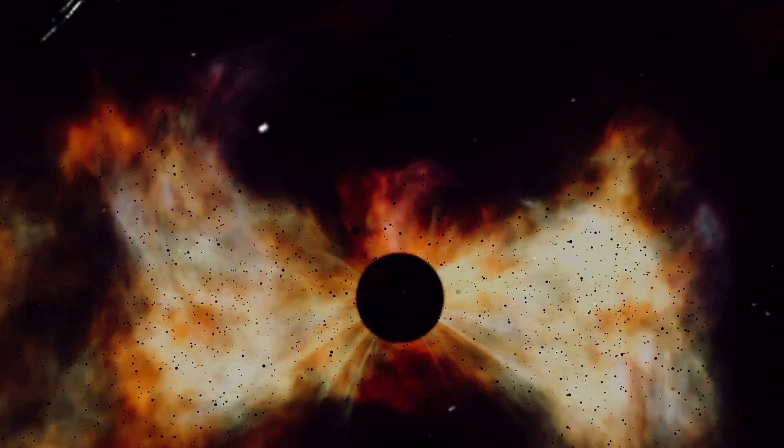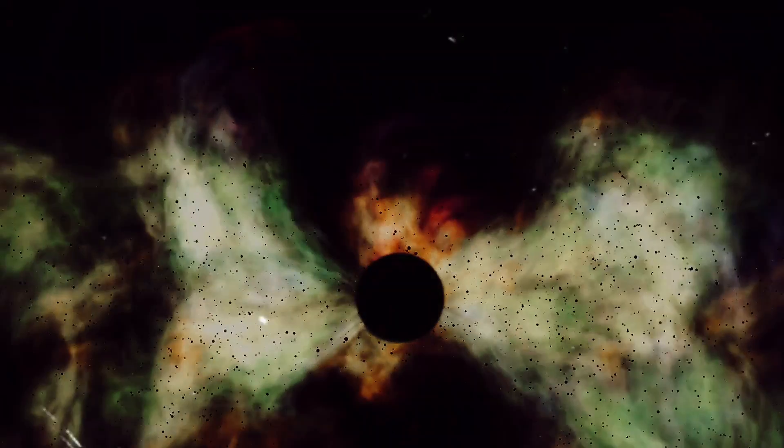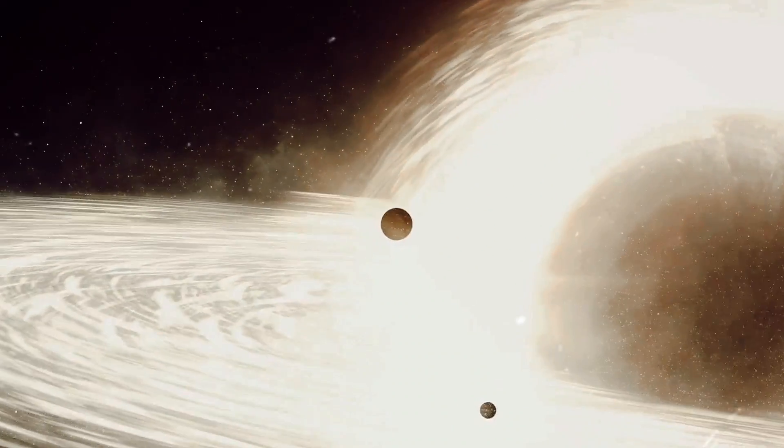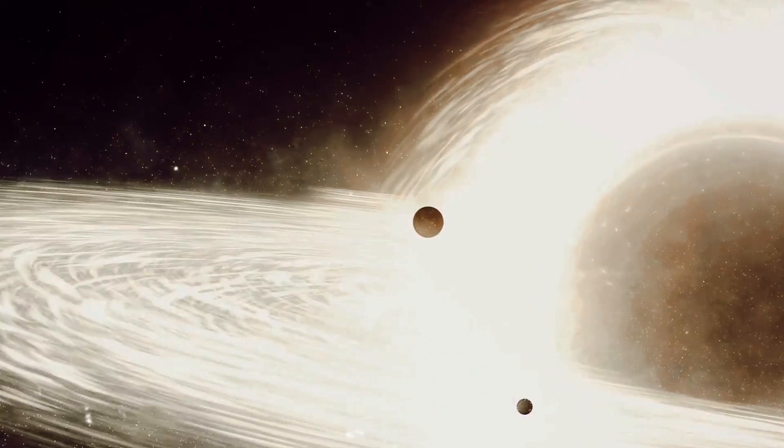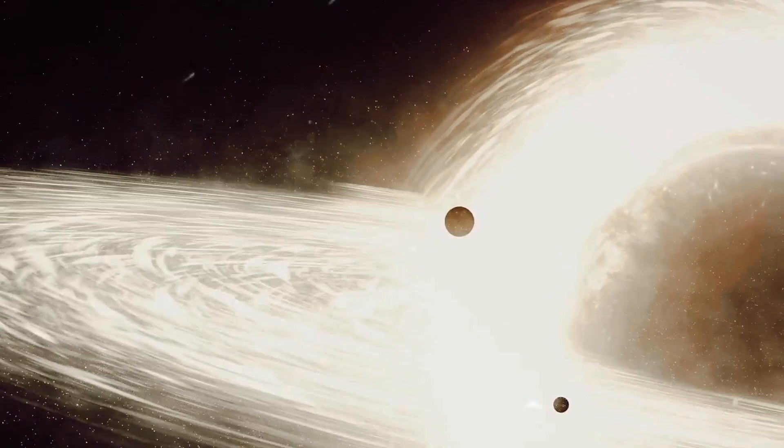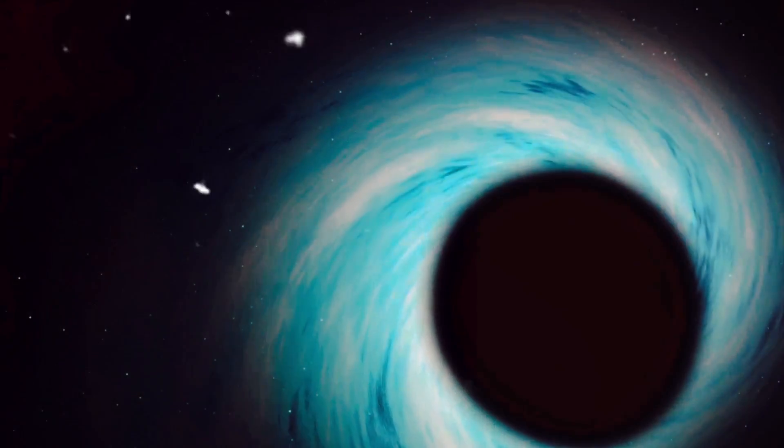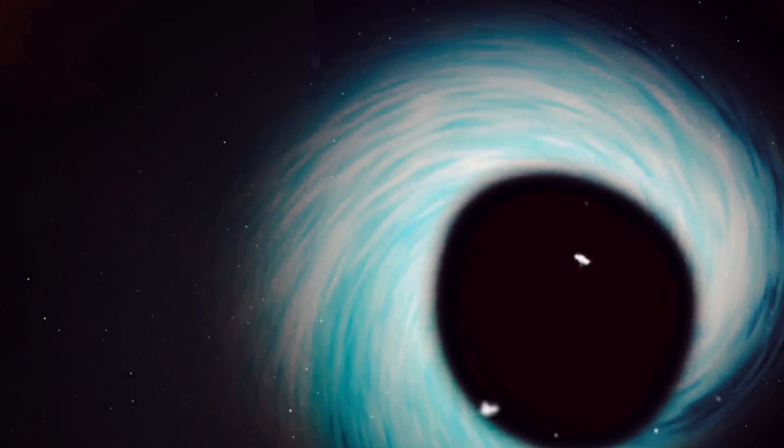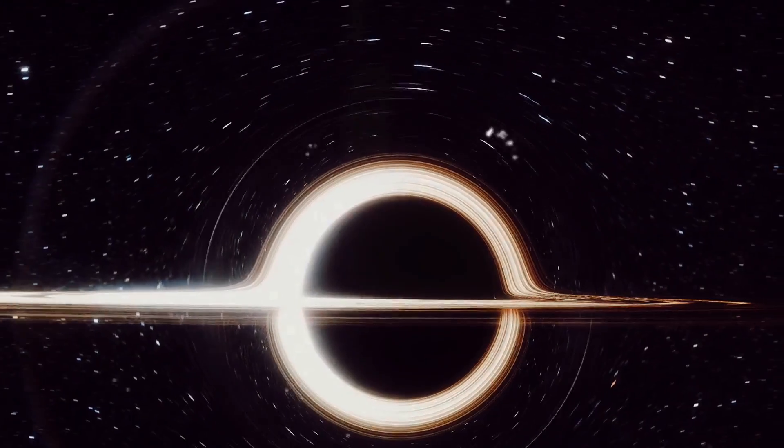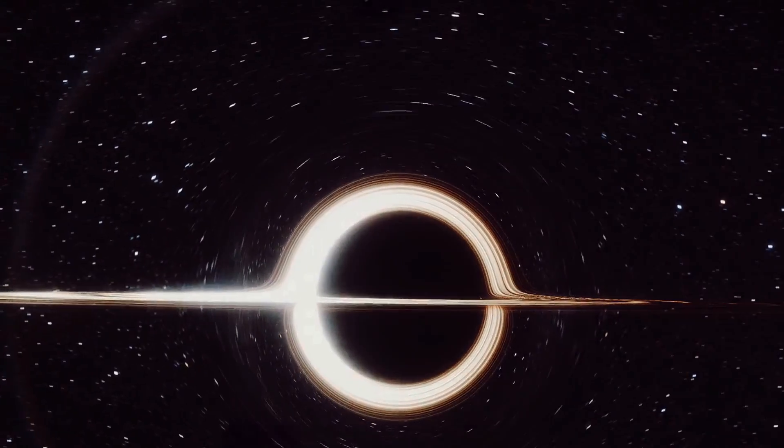Planet's cosmic dance partner is a black hole, a predator of the cosmos. This is where the story of planet takes a dark turn into the abyss of a cosmic predator, the black hole. Black holes are the universe's most mysterious and formidable entities. Born from the death throes of massive stars, they are the embodiment of extreme gravity.